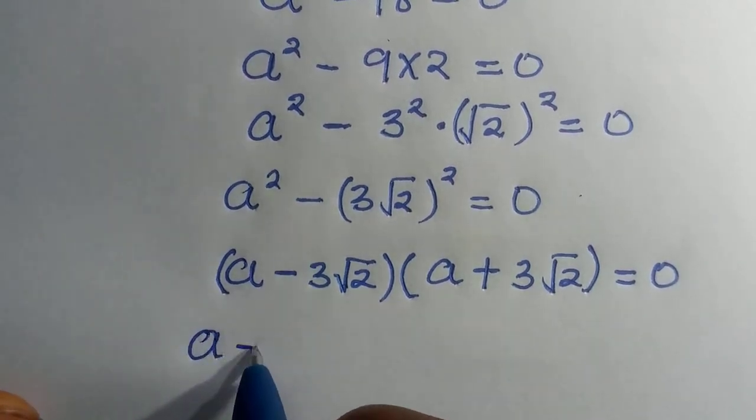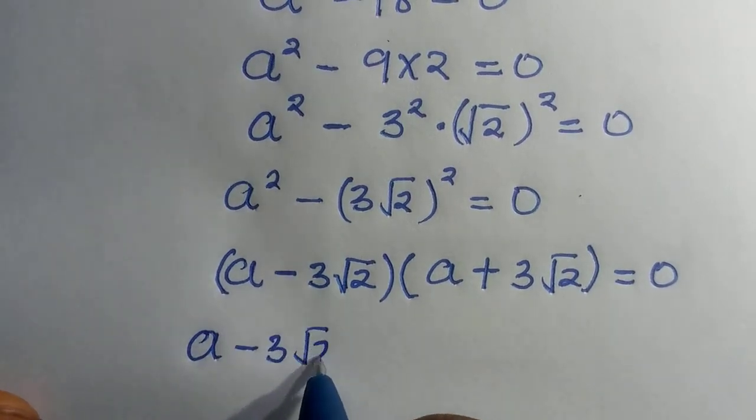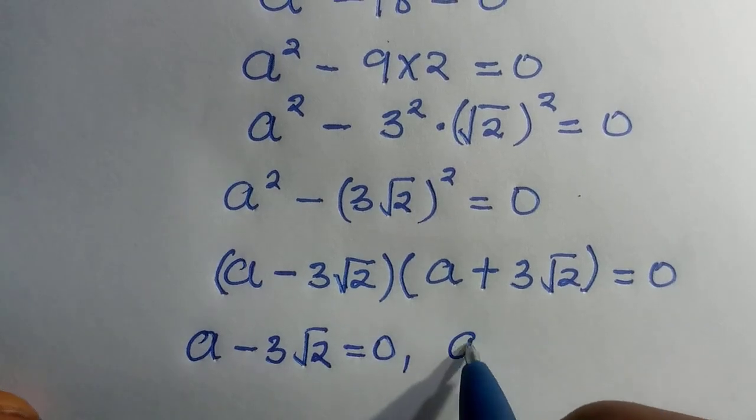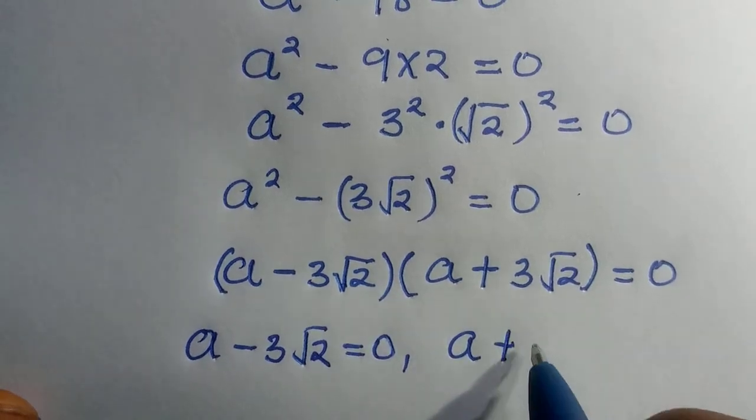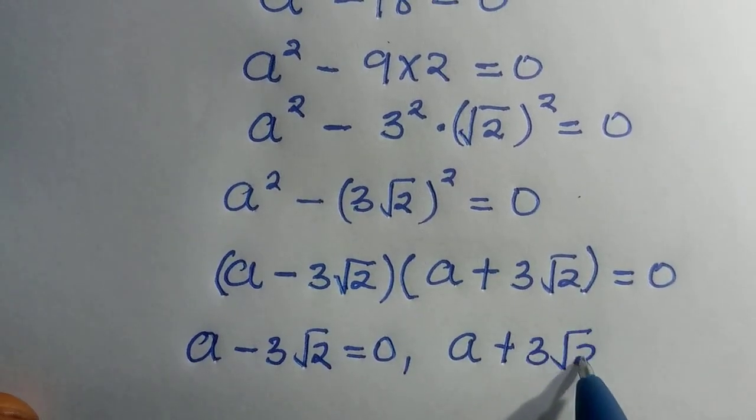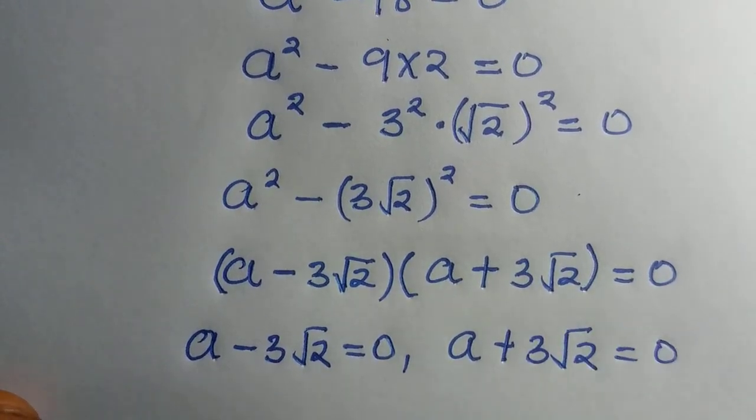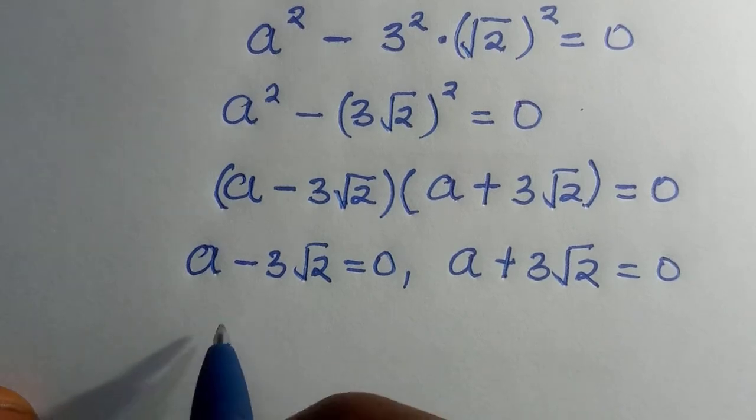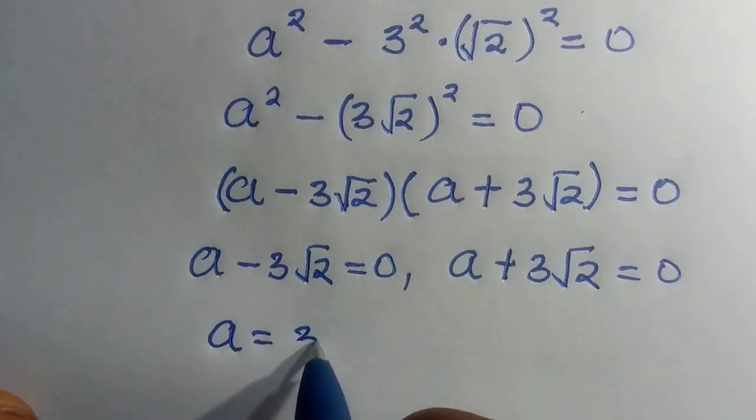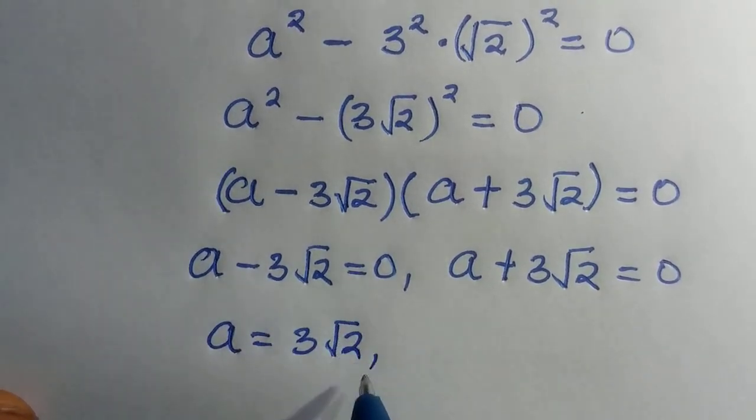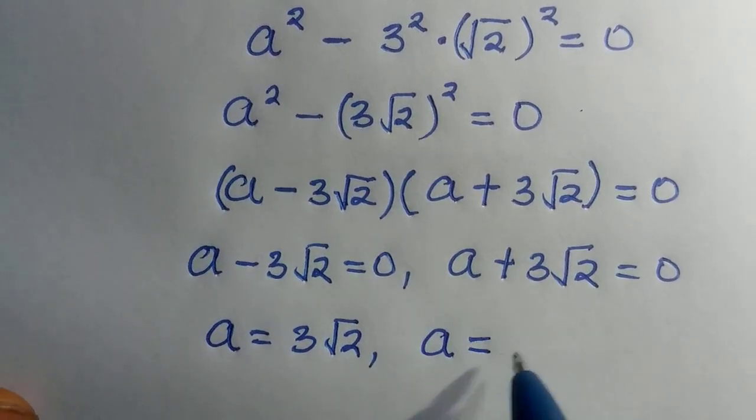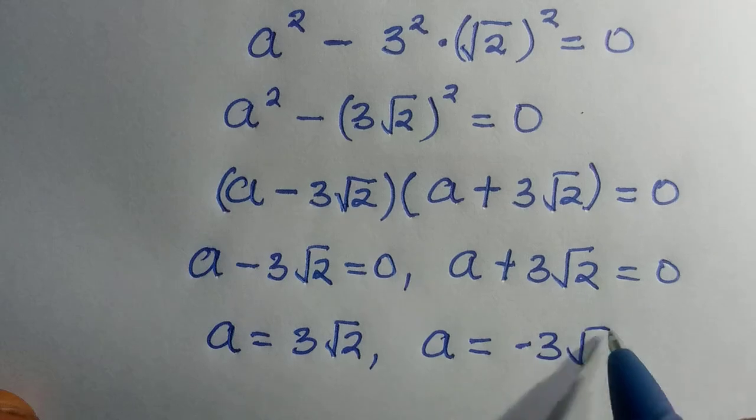And then we have a minus 3 root 2 equals 0, or we consider the second one, which is a plus 3 root 2 equals 0.